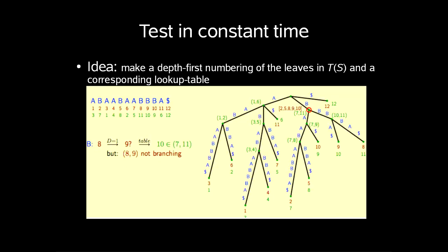To do this we make a depth first numbering of all the leaves in T(S) and corresponding lookup table. Now we can do the test by, for example, looking in our string at node 8 which has depth 1. We look up index 9 and get 10. But (8,9) is not branching. And then we go on. So the running time we spend at each node is O(|LL(v)|).